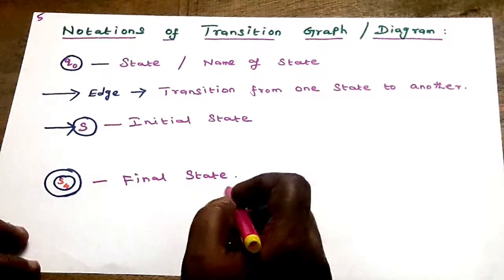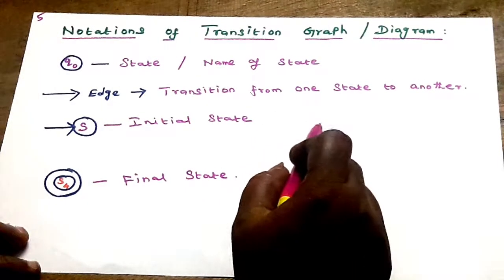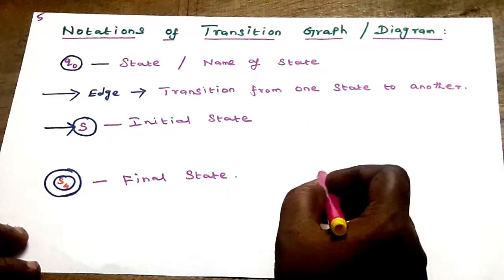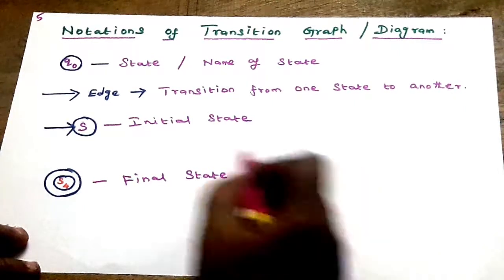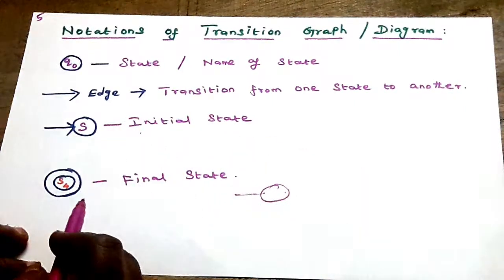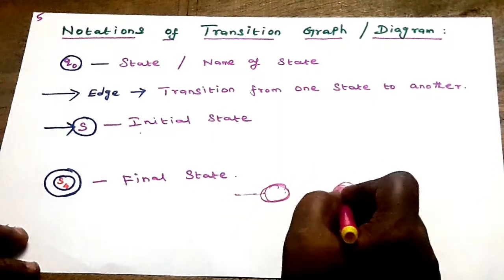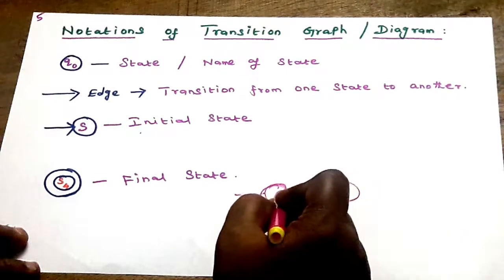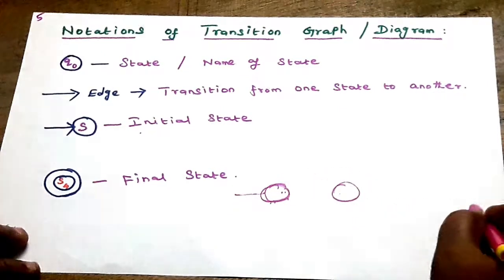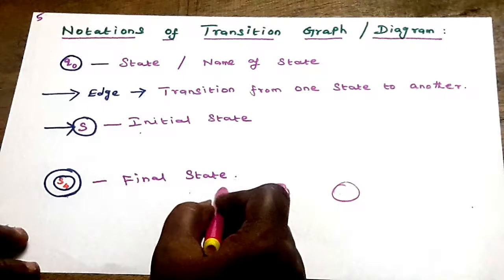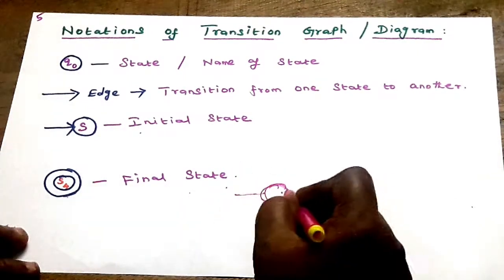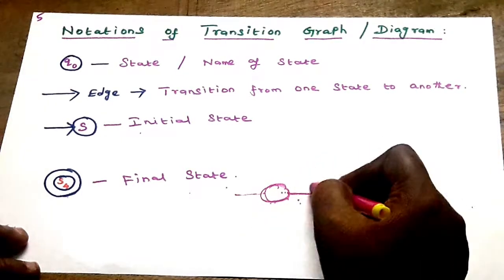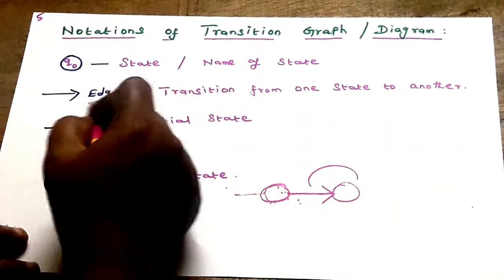This is very important: notations of the transition graph. What are the symbols used in a transition graph? First rule: the circle represents a state or vertex. The double circle is the final state. In between, arrow marks are edges. The transition goes from one state to another state — that is the edge, which is the mapping from one circle to another.